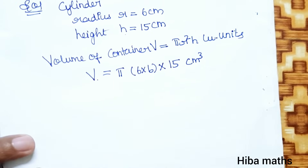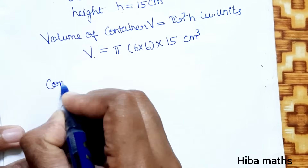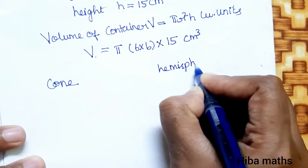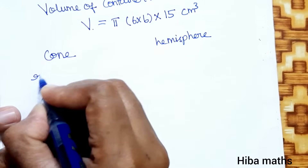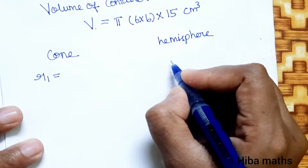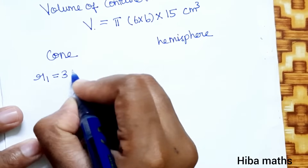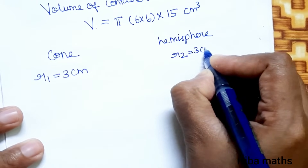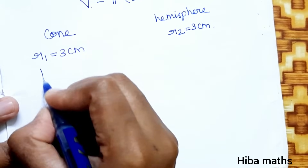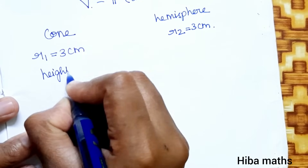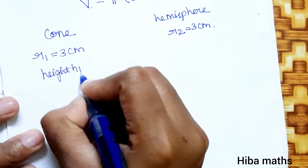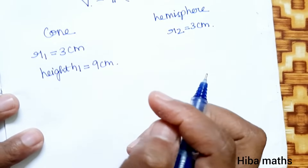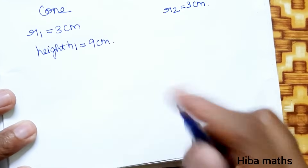Ice cream cone: cone plus hemisphere. For the hemisphere, r1 = 3 cm and r2 = 3 cm. For the cone, height h1 = 9 cm and the hemisphere radius r = r.